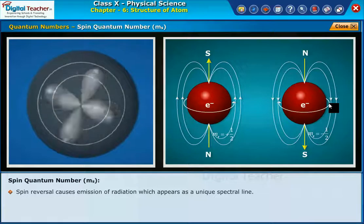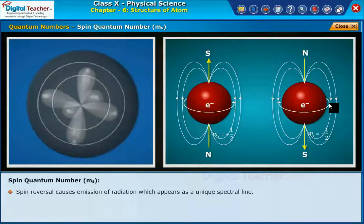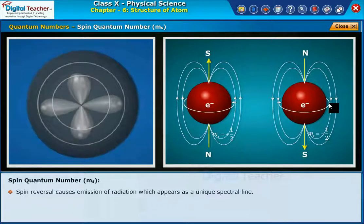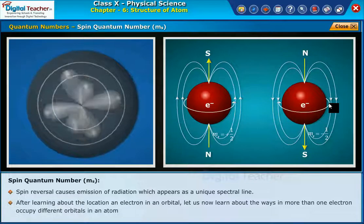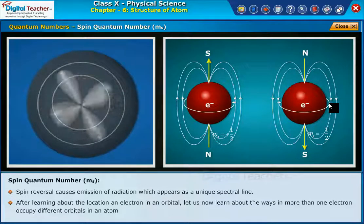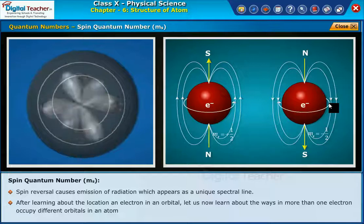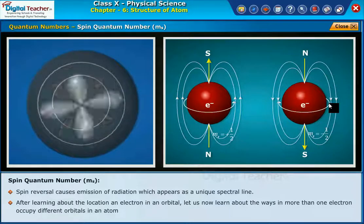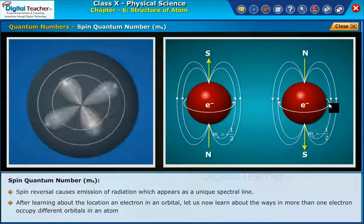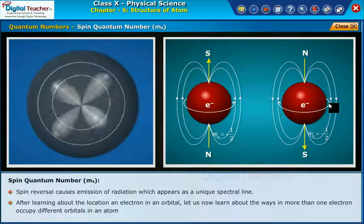The importance of spin quantum numbers is realized when multi-electron atomic systems are studied. Spin reversal causes emission of radiation, which appears as a unique spectral line. After learning about the location of an electron in an orbital, let us now learn about the ways in which more than one electron occupy different orbitals in an atom.